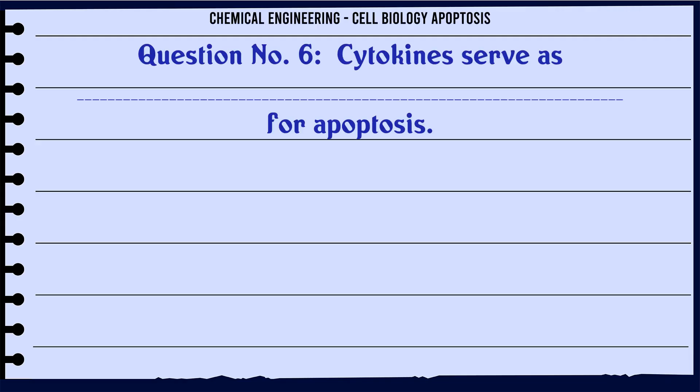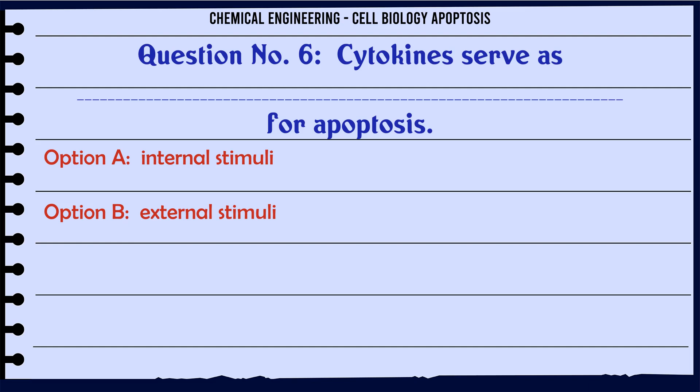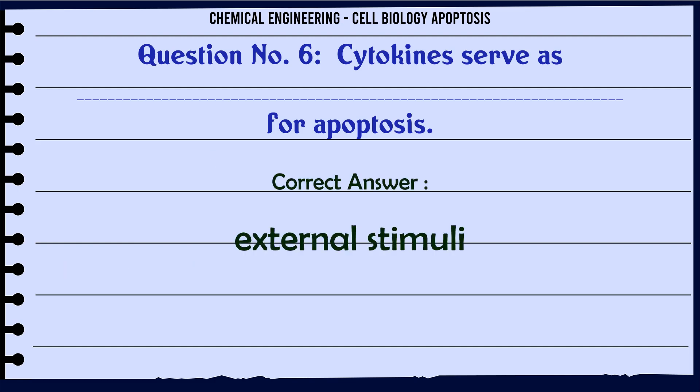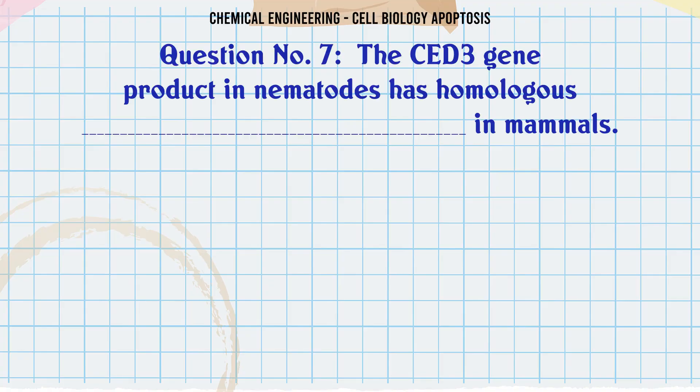Cytokines serve as what for apoptosis? A. Internal stimuli, B. External stimuli, C. Inhibitors, D. Substitutes. The correct answer is External stimuli.